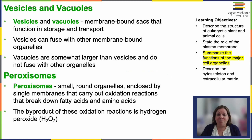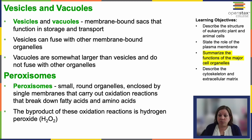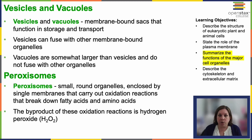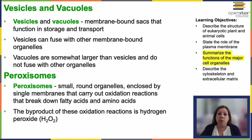A bit more about storage compartments: vesicles and vacuoles are membrane-bound sacs that function for storage and transport. Vesicles can fuse with other membrane-bound organelles sharing a phospholipid bilayer. Vacuoles are somewhat larger than vesicles and tend not to fuse with organelles — they're larger storage spaces. Then we have peroxisomes, which are small round organelles enclosed by a single membrane that carry out oxidation reactions breaking down fatty acids and amino acids. The byproduct is hydrogen peroxide, which must stay contained or it will damage the cell — well-contained membrane-bound spaces are very important for cell function.